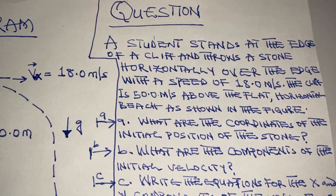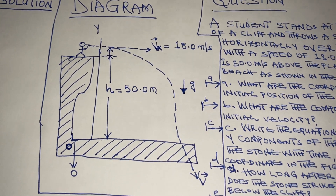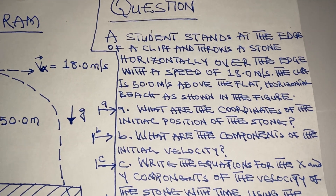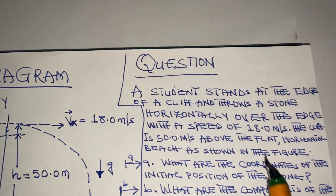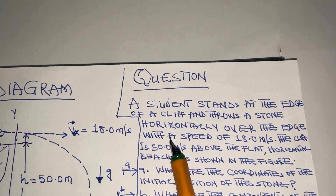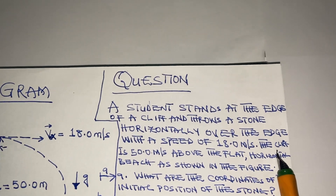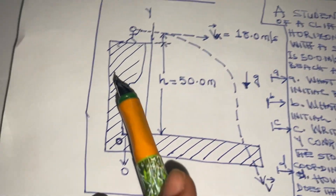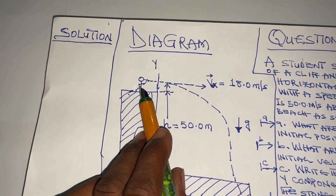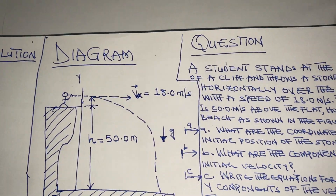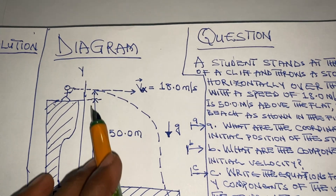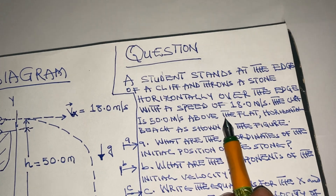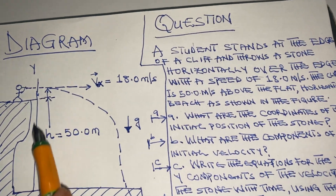In this video we're going to solve this question. A student stands at the edge of a cliff and throws a stone horizontally over the edge with a speed of 18.0 meters per second. The cliff is 50.0 meters above the flat horizontal beach, as shown in the figure. This is the student, this is the stone he throws horizontally, and here is the beach below, with a height of 50.0 meters.